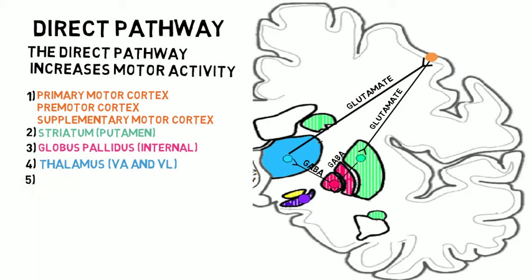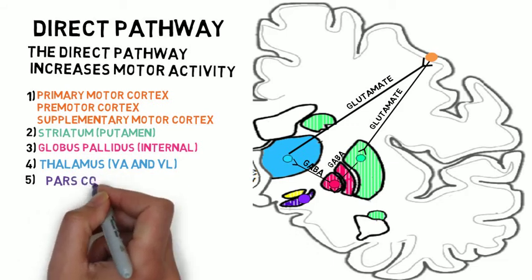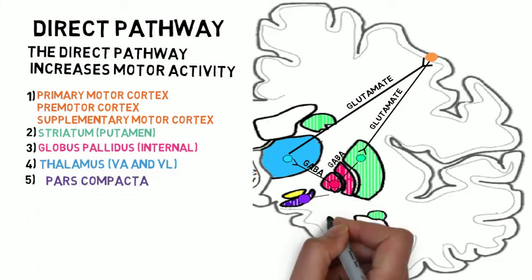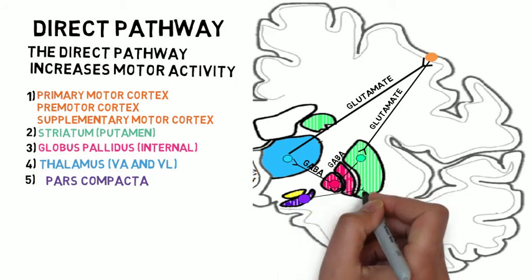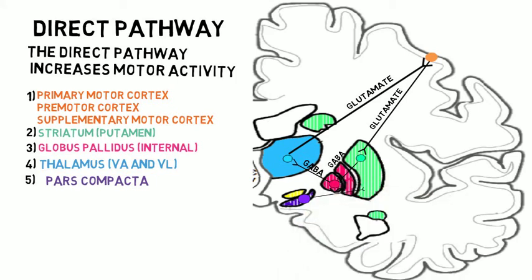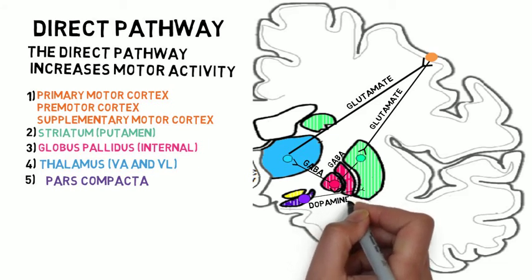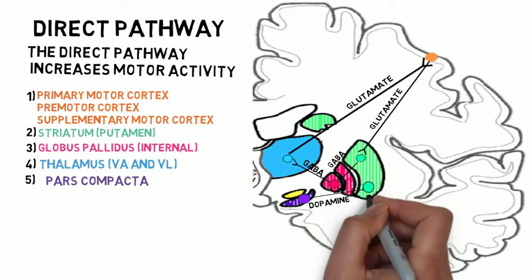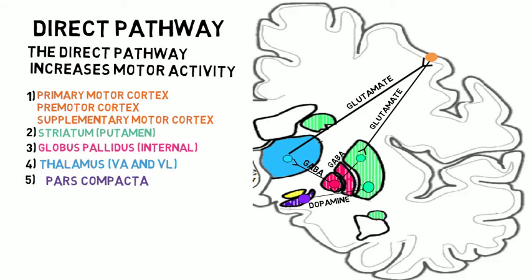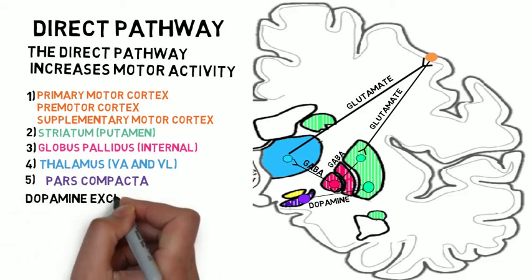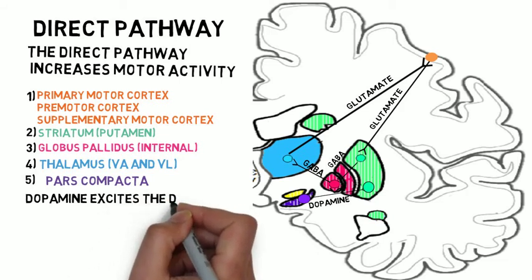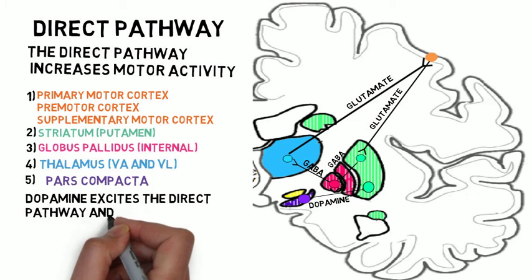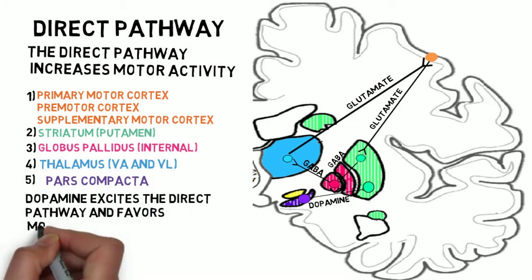The substantia nigra pars compacta contains dopamine-releasing neurons that project heavily to the striatum. Within the striatum, there are two broad varieties of neurons: those that express D1 receptors and those that express D2 receptors. Striatal neurons in the direct pathway express D1 receptors that are excited by dopamine. Therefore, dopamine excites the direct pathway and favors activation of motor movement.